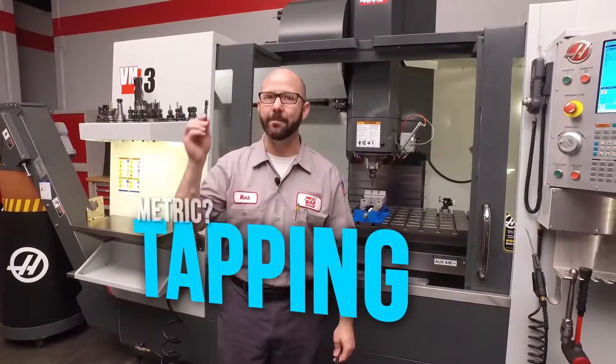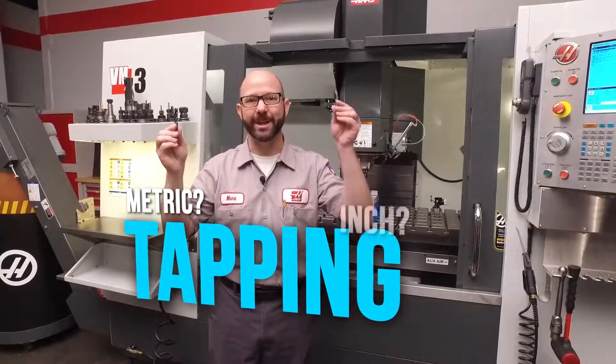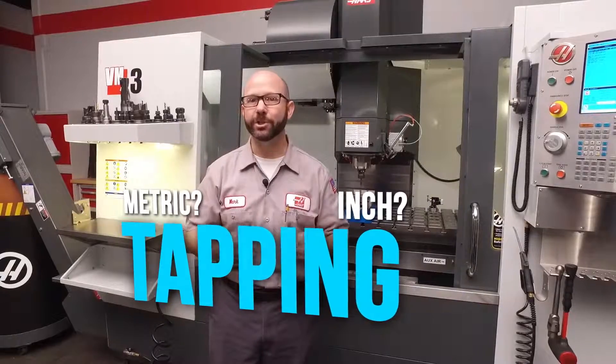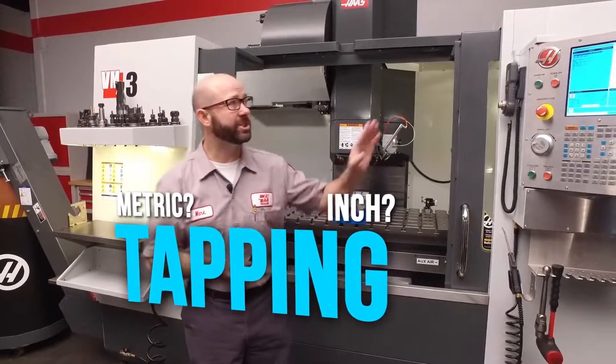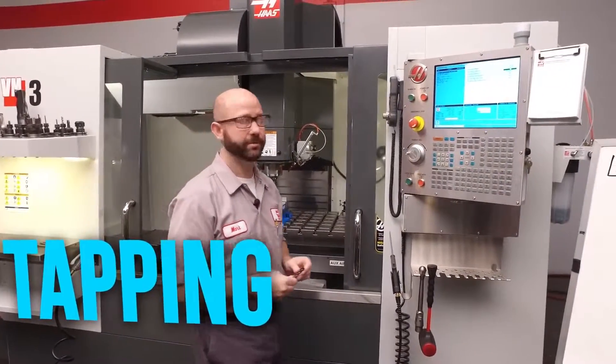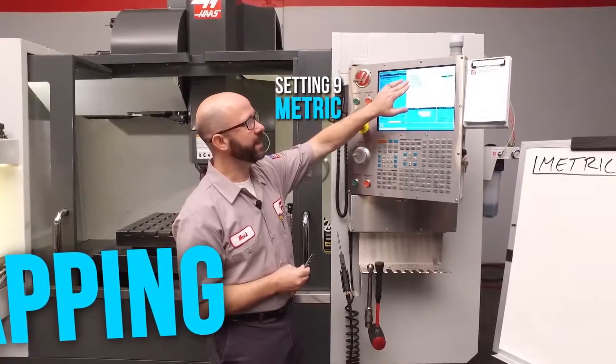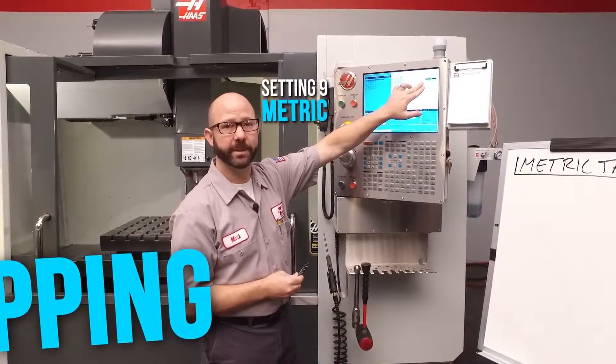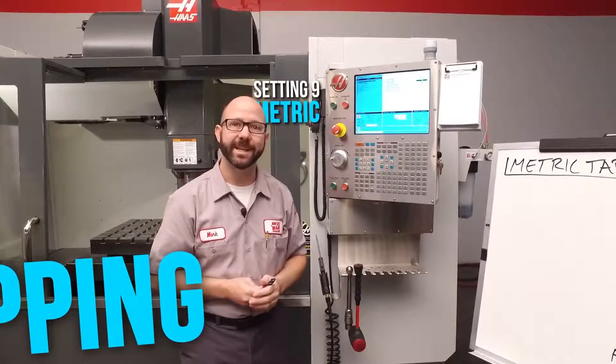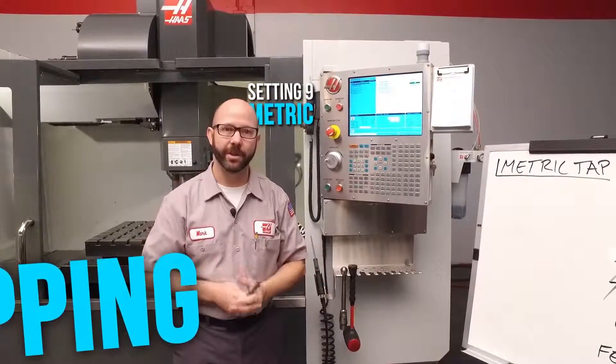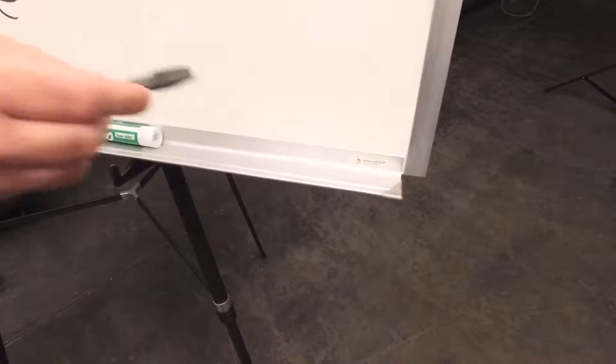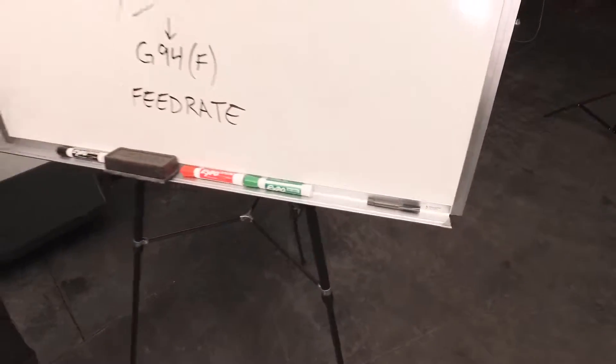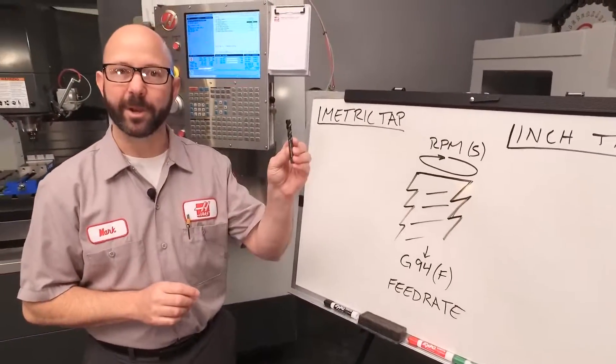You might be programming a metric tap, or you might be programming an inch tap. Today we're going to show you how to do both on a machine that is set up in metric mode. We've got setting 9 dimensioning set to millimeters. If your machine is set to inch, then we've made a different video for you. We'll come back to this inch tap in a minute. Right now we're going to focus on programming our metric tap.